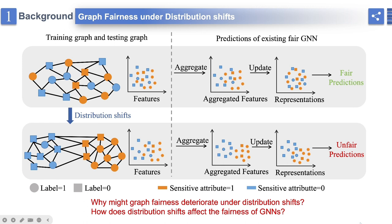However, they are all proposed under the common hypothesis that the training and testing data are under identical distribution. However, distribution shifts frequently occur and can adversely affect the fairness performance of existing fair GNNs. This is exemplified in the figure, where a fair GNN designed for job recommendation is trained on a social network from one state and subsequently applied to a network from another state. However, the two graphs are under different distributions.